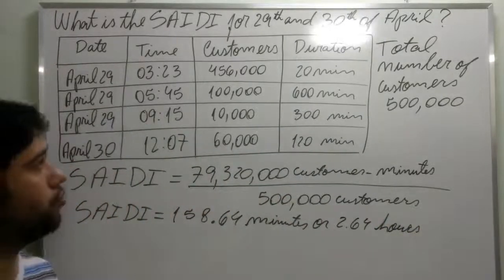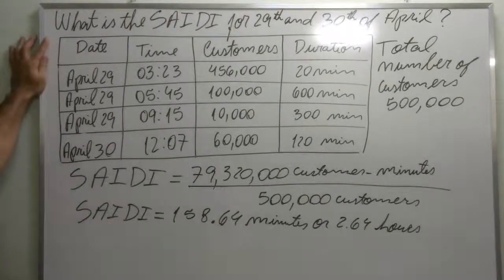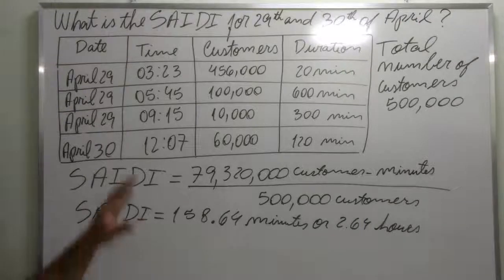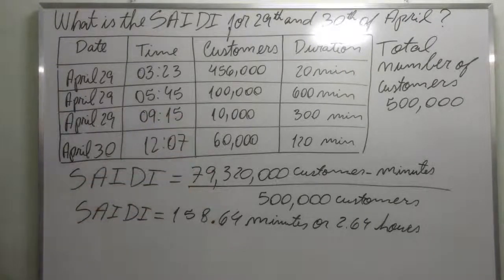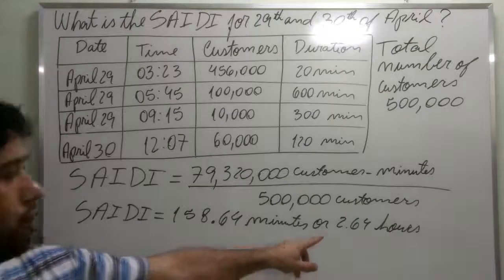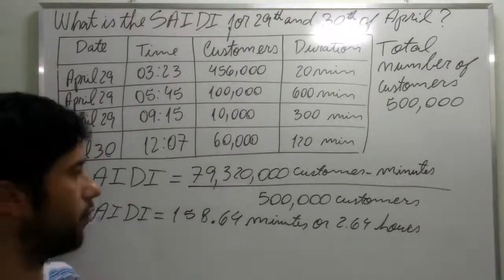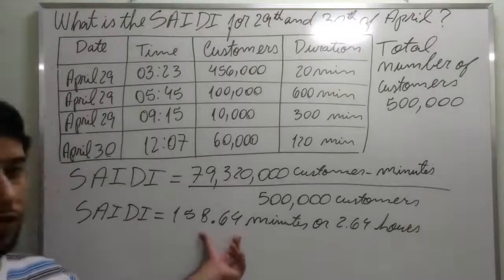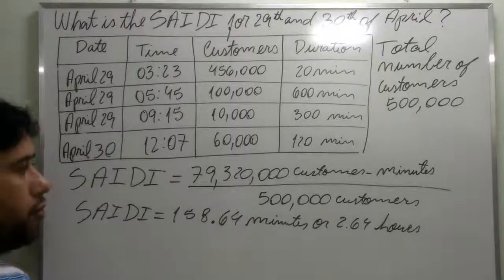So to return to the question: what is the SATI for the 29th and 30th of April? The power utility will gather this data and give it to its engineers, who will calculate that the SATI is 158.64 minutes or 2.64 hours. In some regulated markets, the regulators require this data from distribution utilities to measure the quality of service.